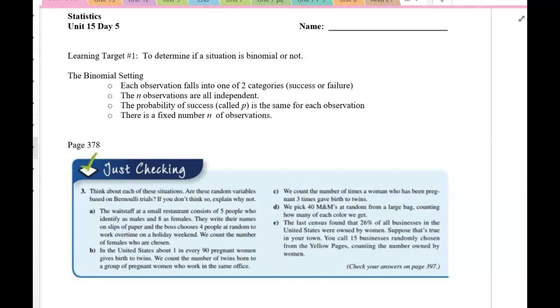So if you look at the handout or the screen, there are four things to be binomial. You need two outcomes, which we typically say success or failure. The observations need to be independent. The probability of success needs to be the same for each observation. And the last thing is there needs to be a fixed number of observations.